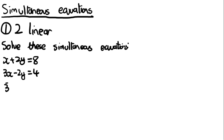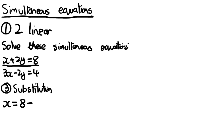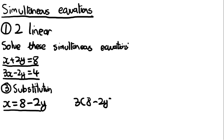The third way is by substitution. For one of the equations, make one variable the subject, then substitute it into the other equation. Using the first equation, make x the subject: x = 8 − 2y. Then substitute into the second equation: 3(8 − 2y) − 2y = 4.